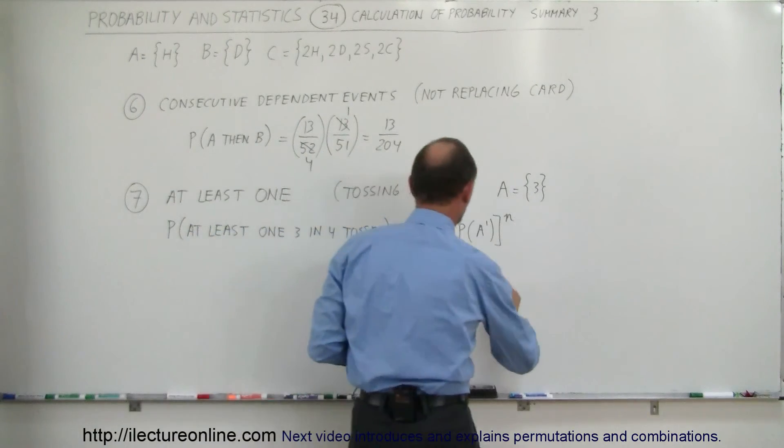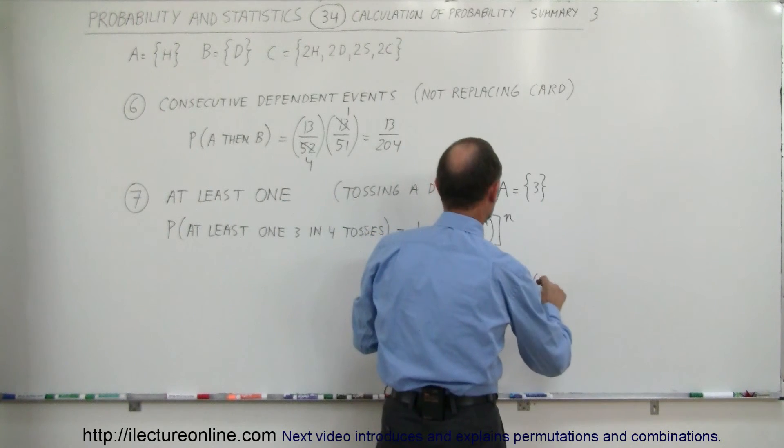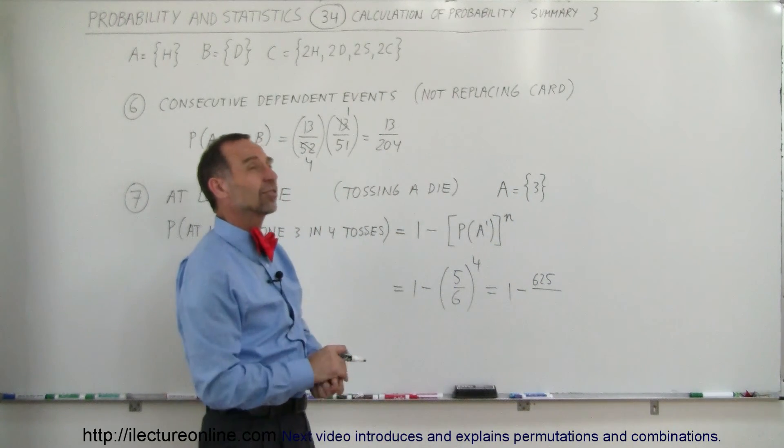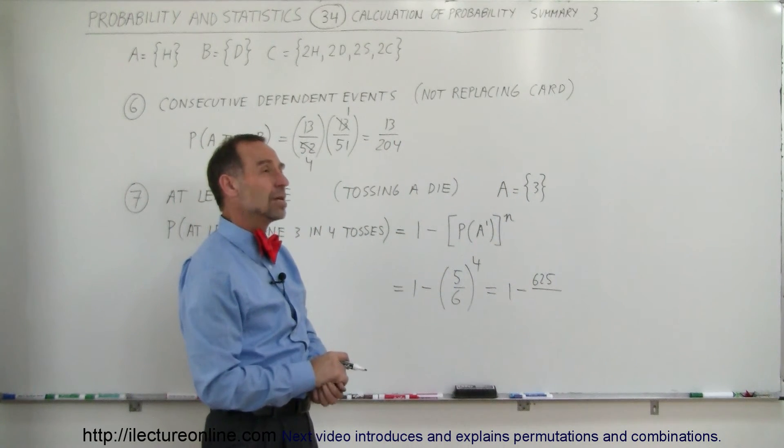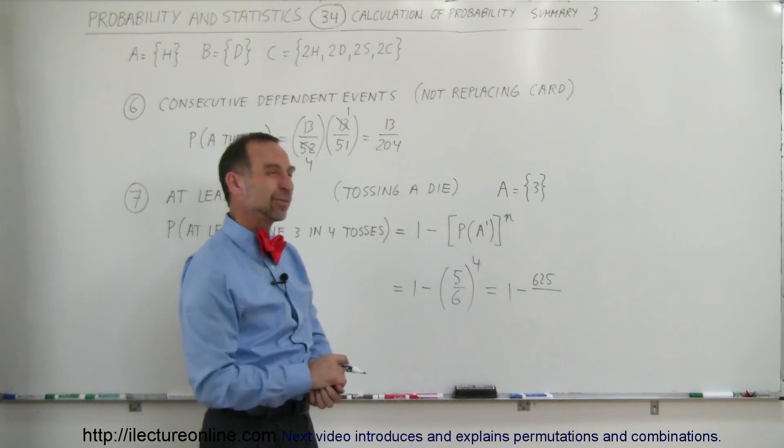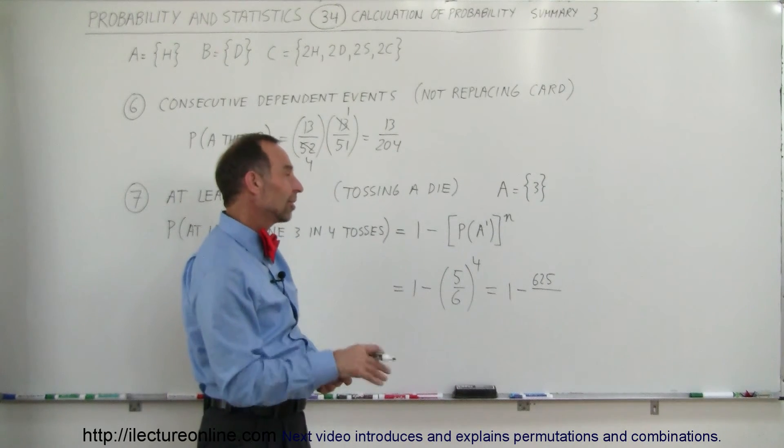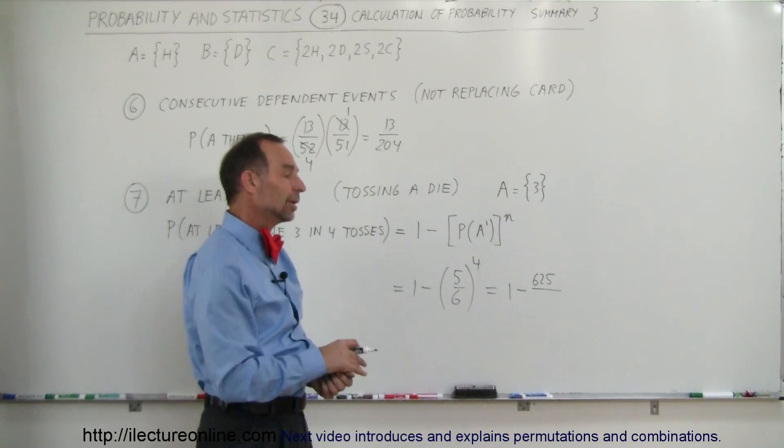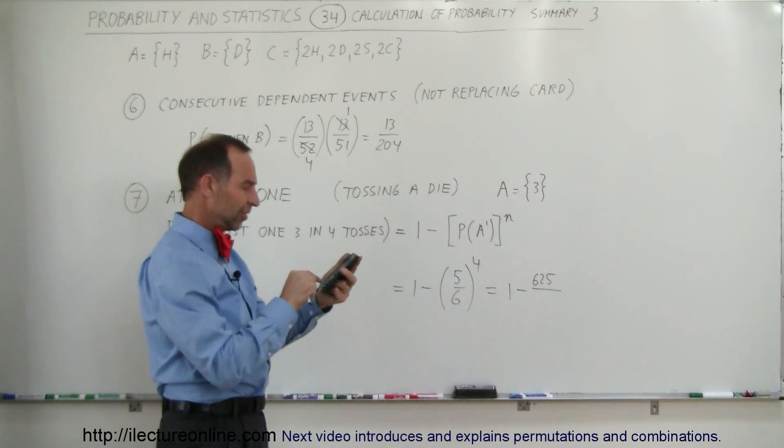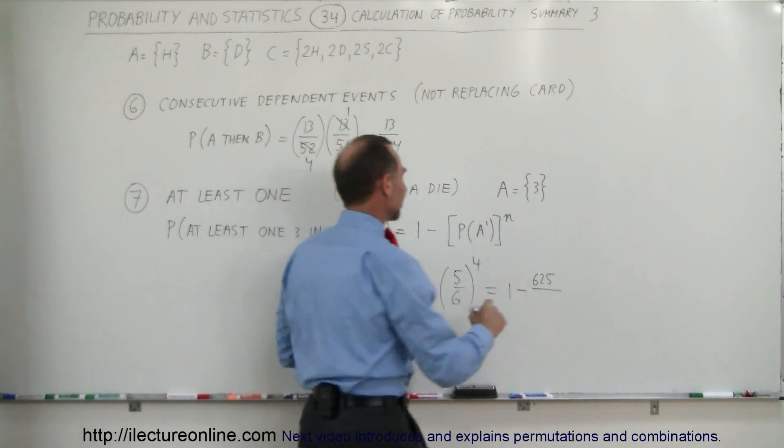So the result, the probability is 1 minus 5 to the 4th power would be 625 divided by 6 to the 4th power, that would be 36 times 36. Let's see here, 36 times 30, that would be 1080. You know what? I'm going to grab a calculator, my brain is getting pretty tired. So 36 times 36 equals 1296, there we go.